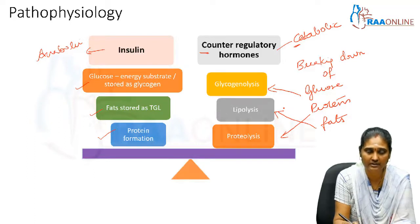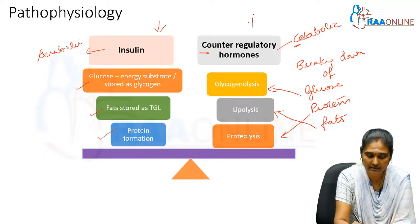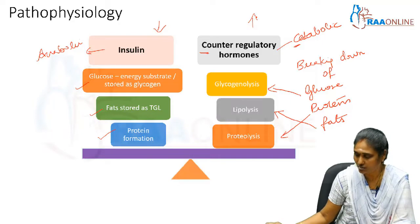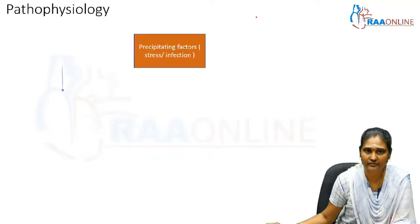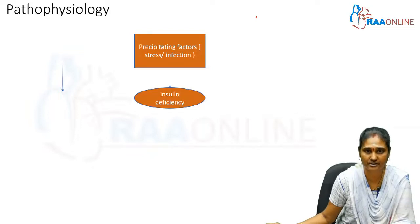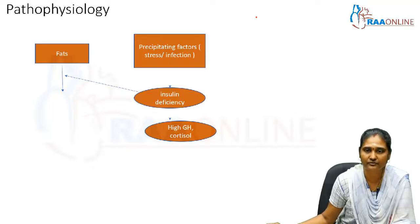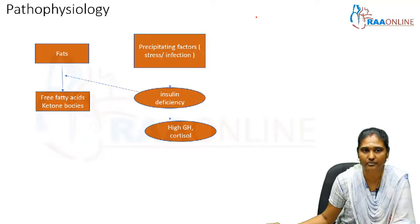When there is an imbalance between anabolic and catabolic hormones — specifically a relative lack of insulin and overactivity of counter-regulatory hormones — DKA results. Pathologically, any precipitating factor such as stress, trauma, or infection can trigger this. Insulin deficiency leads to breakdown of fats, releasing free fatty acids and ketone bodies into circulation, resulting in ketosis and acidosis.